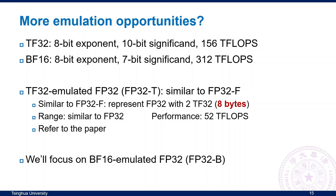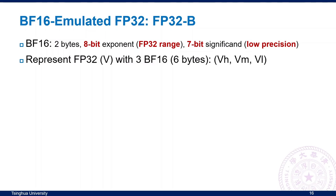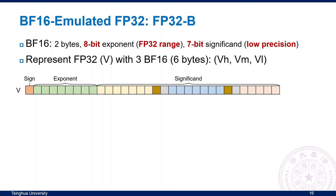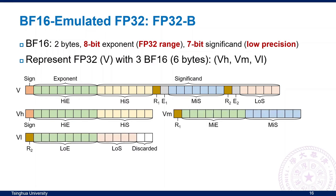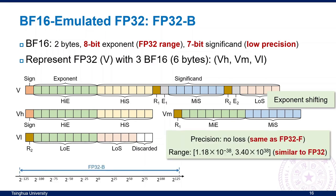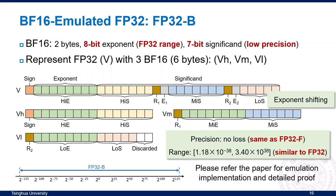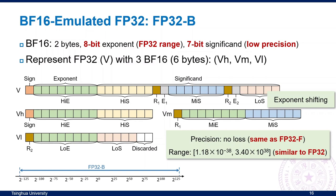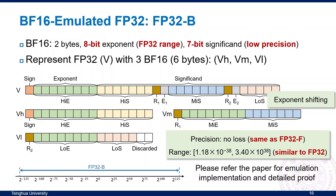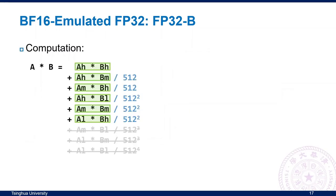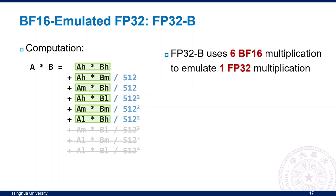We'll focus on FP32B here. FP32B represents an FP32 value V with 3 BF16 numbers: V_H, V_M, and V_L. We also use the exponent shifting technique in this type, so B-type has a similar range compared to FP32. Because 3 BF16 numbers provide more significant bits, B-type has no precision loss during emulation. The computation for emulating A times B with FP32B uses 9 multiplications, three of which can be skipped. So we use 6 BF16 multiplications to emulate one FP32 multiplication. BF16 has a peak performance of 312 TFLOPs, so FP32B achieves 52 TFLOPs.